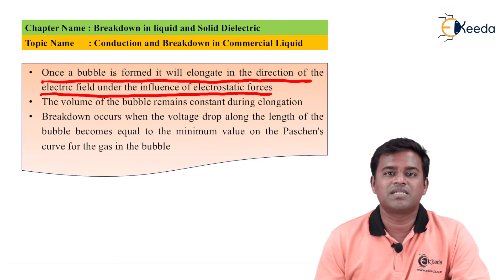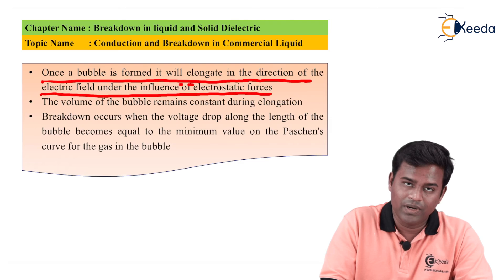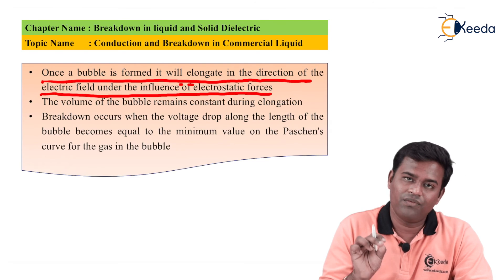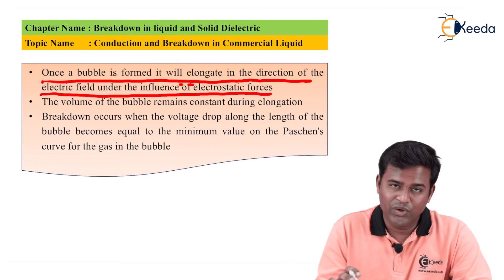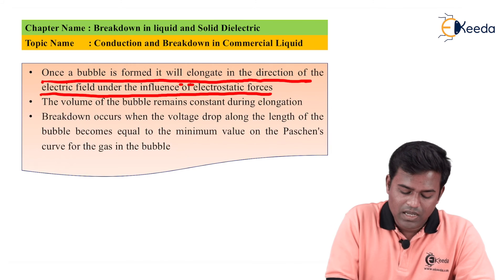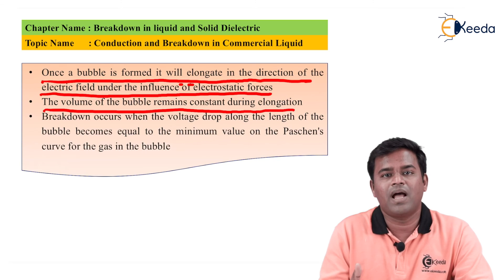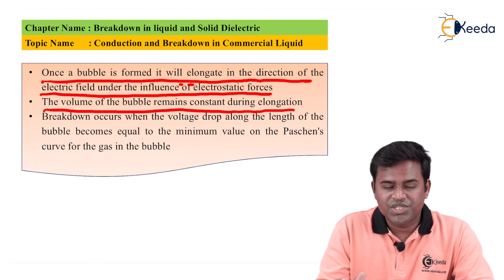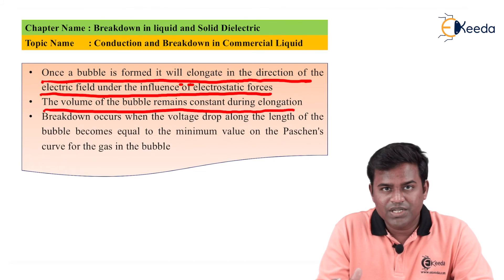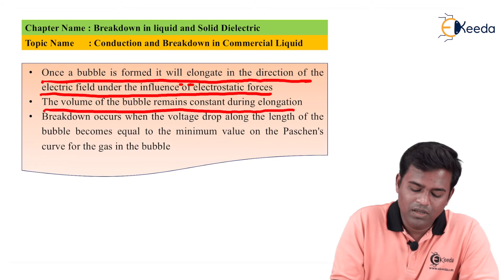When gas pockets are created in the commercial liquid and a bubble is formed, it will elongate in the direction of the electric field due to electrostatic forces. The volume of the bubble remains constant during elongation — when high voltage is applied, the gas bubble elongates in the direction of the electrostatic force applied, but the volume cannot change; it remains constant.